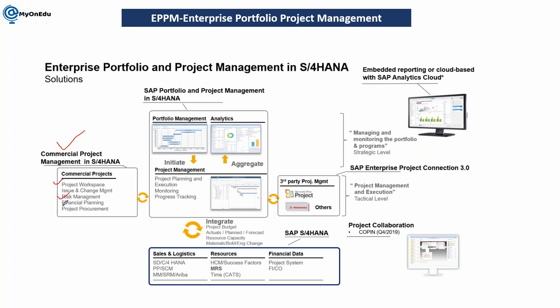You can manage risk, do financial planning, and manage procurement within PPM itself. Portfolio project management has two sub-modules: portfolio management and project management. Portfolio management is to manage your portfolio — when going for any projects, even before starting, how the project is aligned with your portfolio and organizational strategies. It helps calculate the possibility of success. Reports and analytics are available, and it integrates with project system, which in turn integrates with FICO, SD, and MM.